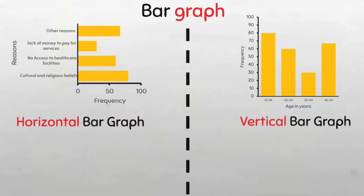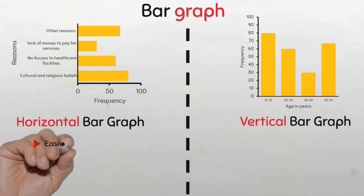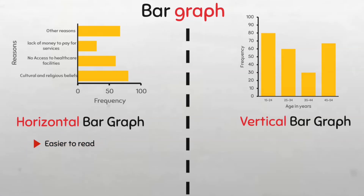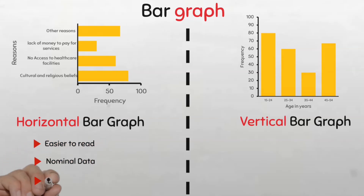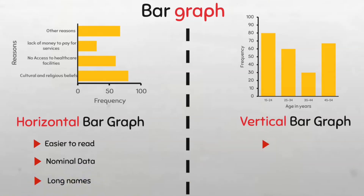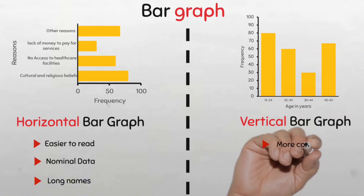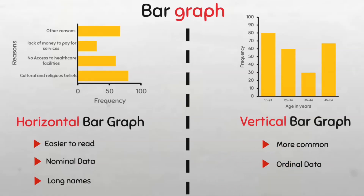To recap: bar graphs can be oriented either horizontally or vertically. Horizontal bar graphs are easier to read and mainly used for nominal data or in situations where the categories have long names, while vertical bar graphs, though more common, are mainly used for ordinal data.